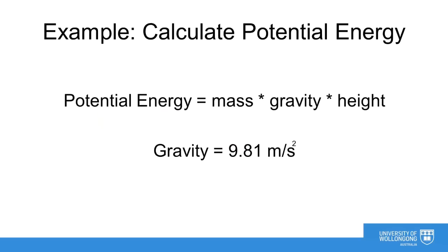To begin with, we will look at a very basic example at solving a problem. Let's look at the way we can calculate potential energy. Potential energy is given by the formula mass times gravity times height. We know that gravity is 9.81 meters a second squared. Let's now start our algorithm using pseudocode.